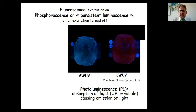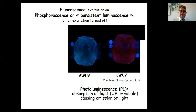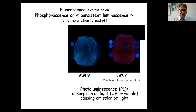In gemology, we typically talk about fluorescence rather than luminescence. Luminescence is the most general term. Fluorescence means you see emitted light while the excitation is on — while your UV light is on. If you turn off the light and can still see light, that's called phosphorescence. There is also a newer concept called persistent luminescence, though for practical gemology you don't need to go into those physical details.